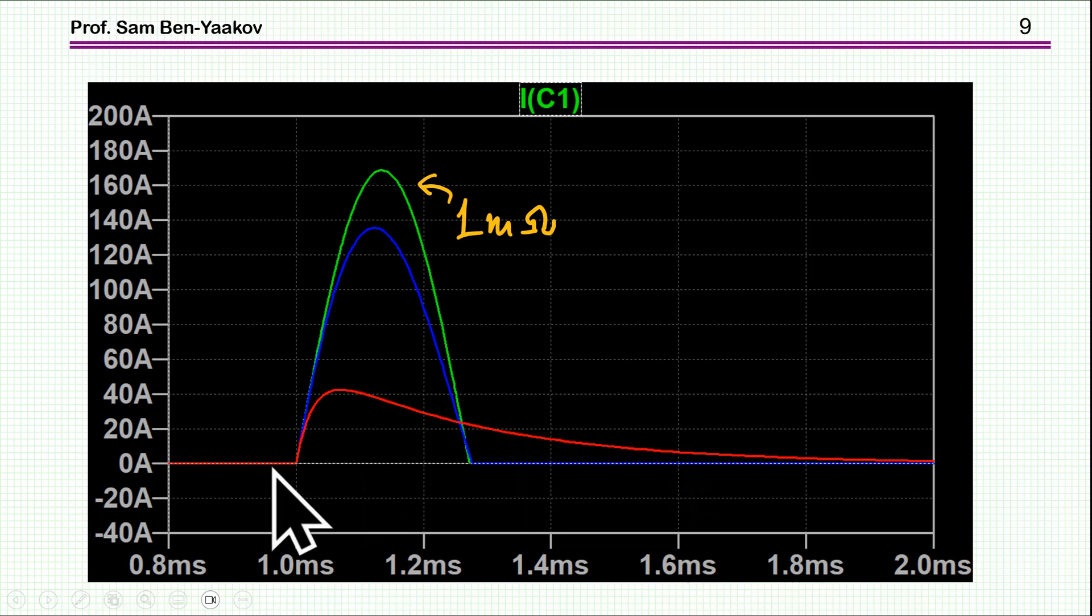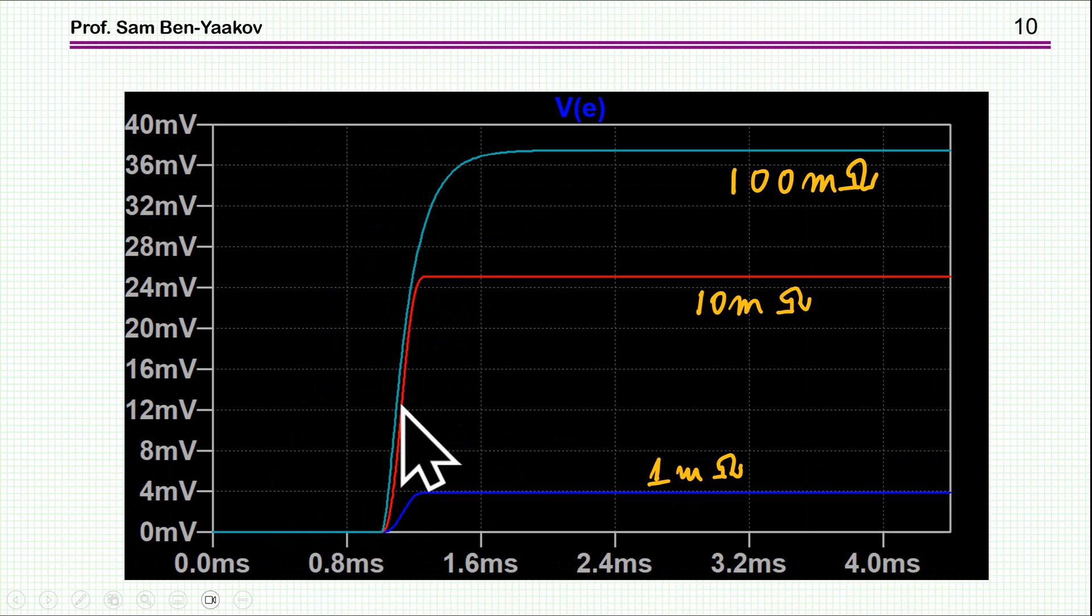Everything else is the same as before. So, now, the current, of course, will be only positive. So, we are going to see only the positive part of it. And this is again for 1 milliohm, 10 milliohms, and 100 milliohms. And now, what about the energy lost? Lo and behold, we see different values. So, in the case of 1 milliohm, there's only 4 millijoules. This is the joules, of course, energy. 10 milliohms, it's about 25. And 100 milliohms, it's approaching this 37.5. So, the question is, how come?